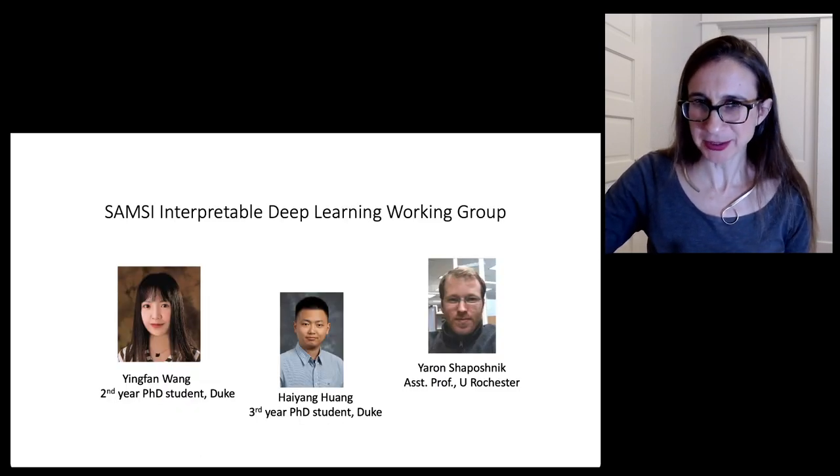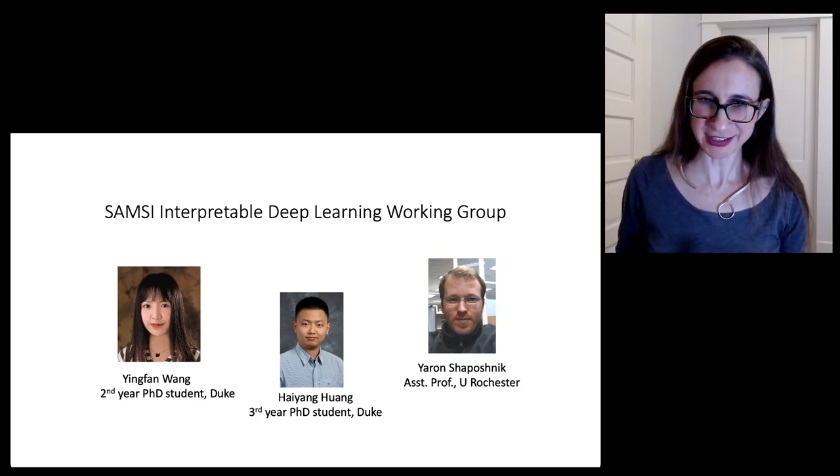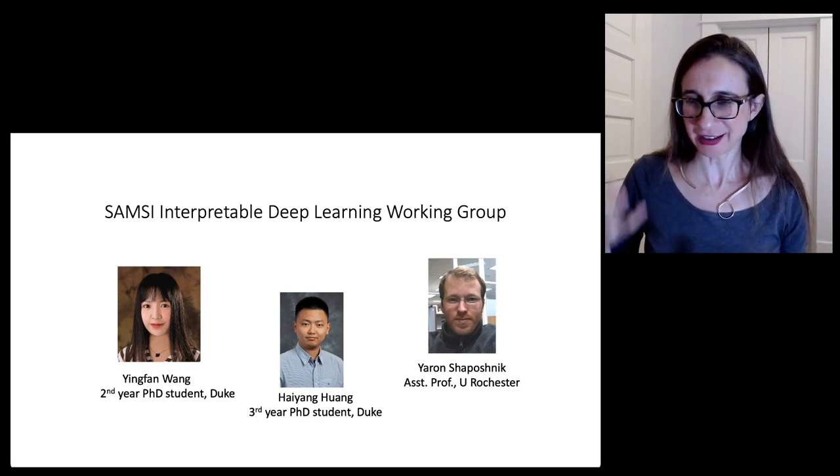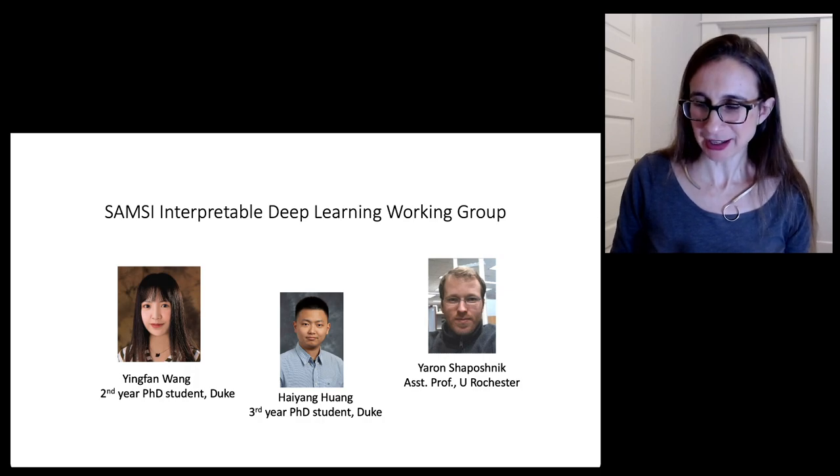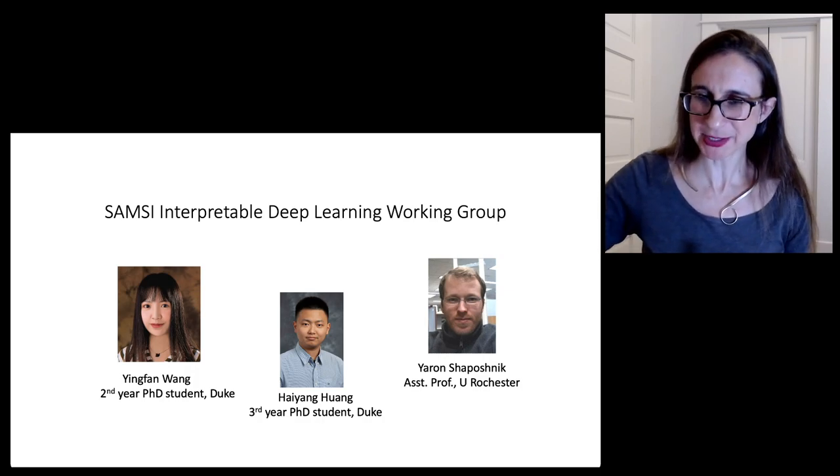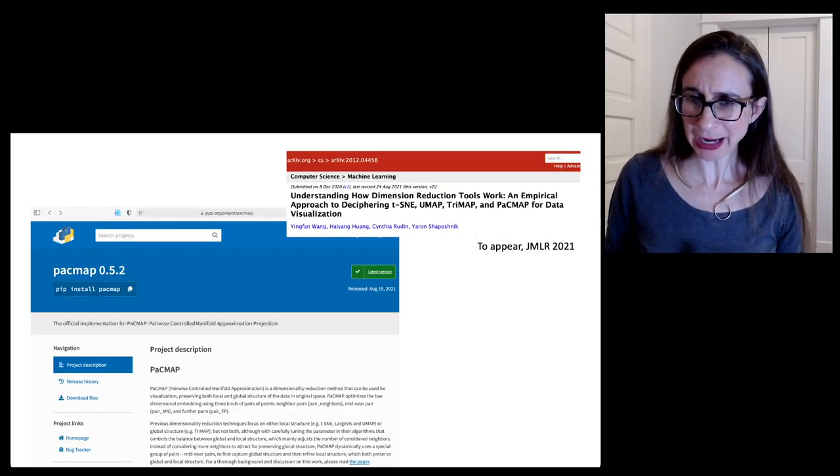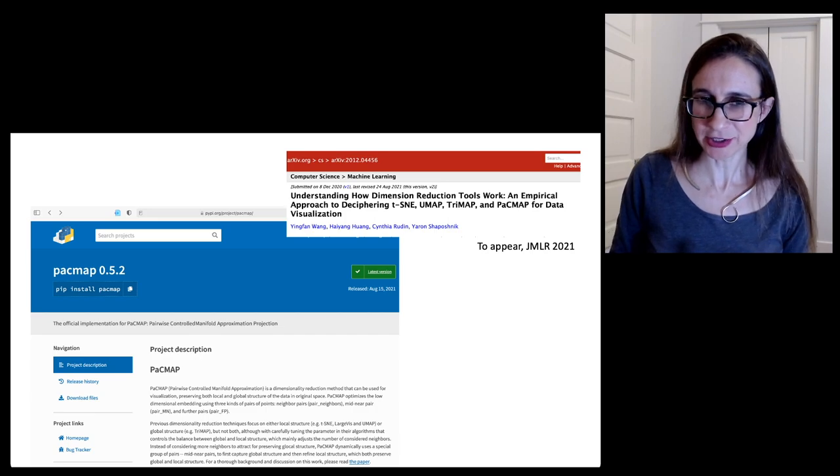So I brought this up to the CMC interpretable deep learning working group, which included three brilliant scientists: Ying Fan, Hai Yang, and Yaron. We worked together to try to derive a new algorithm that would not have these problems. The new algorithm is called PacMap, and PacMap is soon to appear in JMLR.